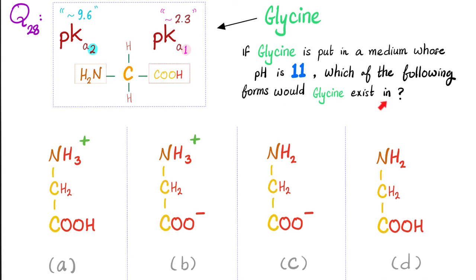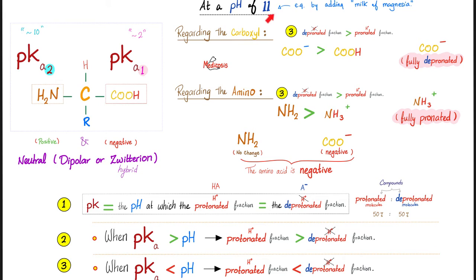Which of the following forms of glycine will exist at pH 11? Please pause. Remember: this pH of 11 is greater than both pKa values — greater than 2.3 and greater than 9.6. If the pH and pKa are equal, the protonated fraction equals the deprotonated fraction. But when pH exceeds the pKa, the deprotonated fraction wins.